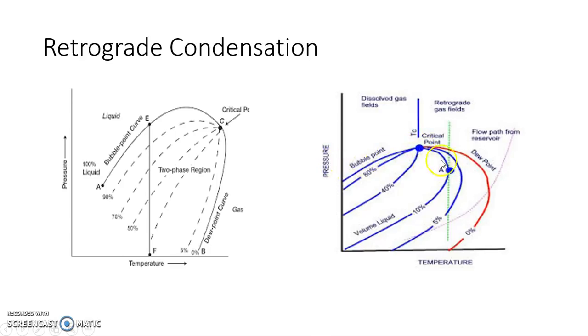Retrograde condensation can be of different kinds depending upon the location of the critical point. In some cases, when you increase the temperature, though we know that vaporization should take place, liquefaction takes place instead. This is known as the retrograde phenomenon.